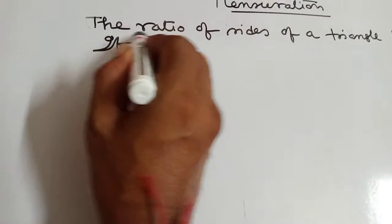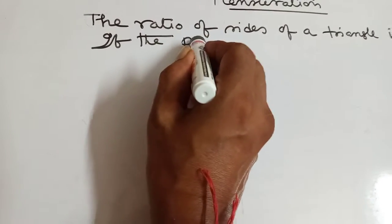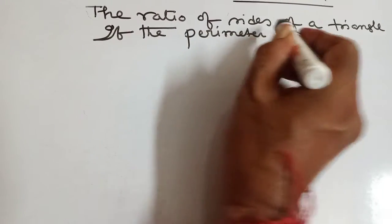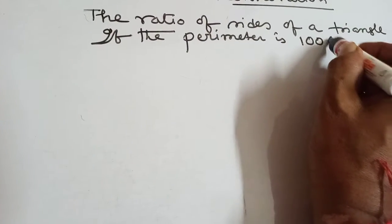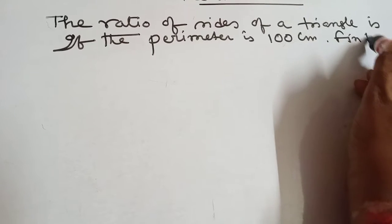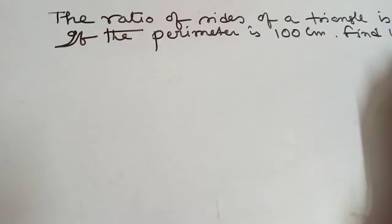If the perimeter is 100 cm, find the length of sides.